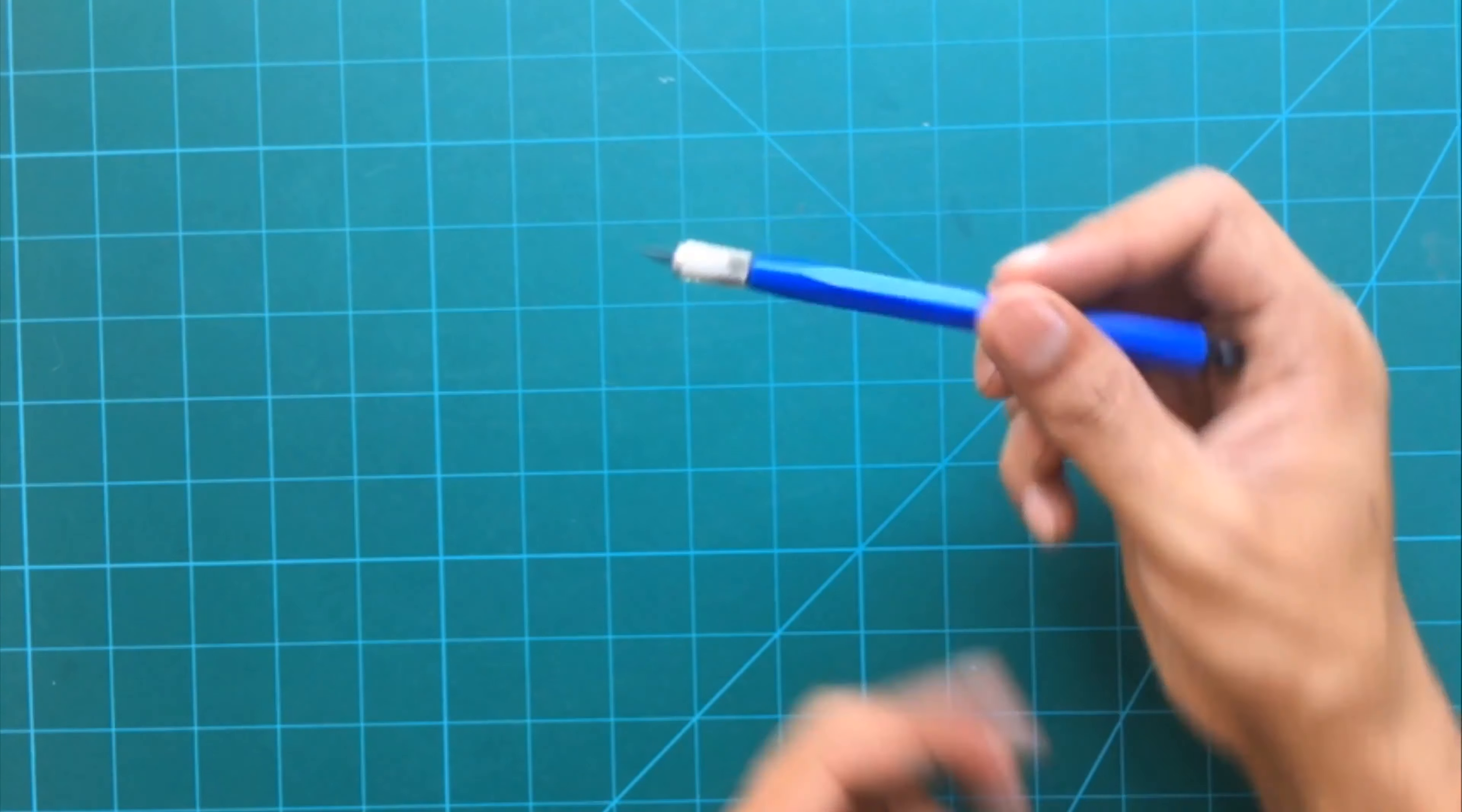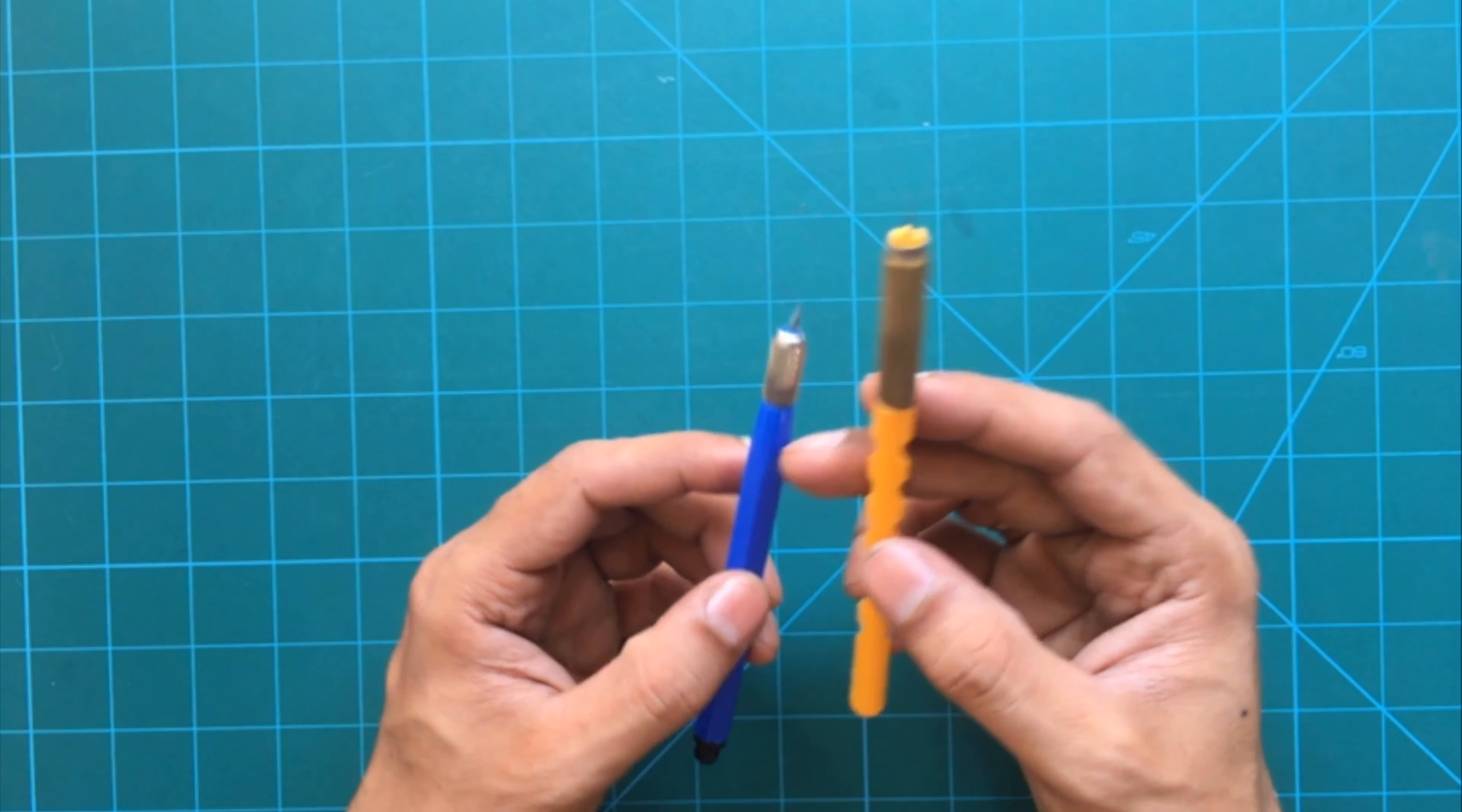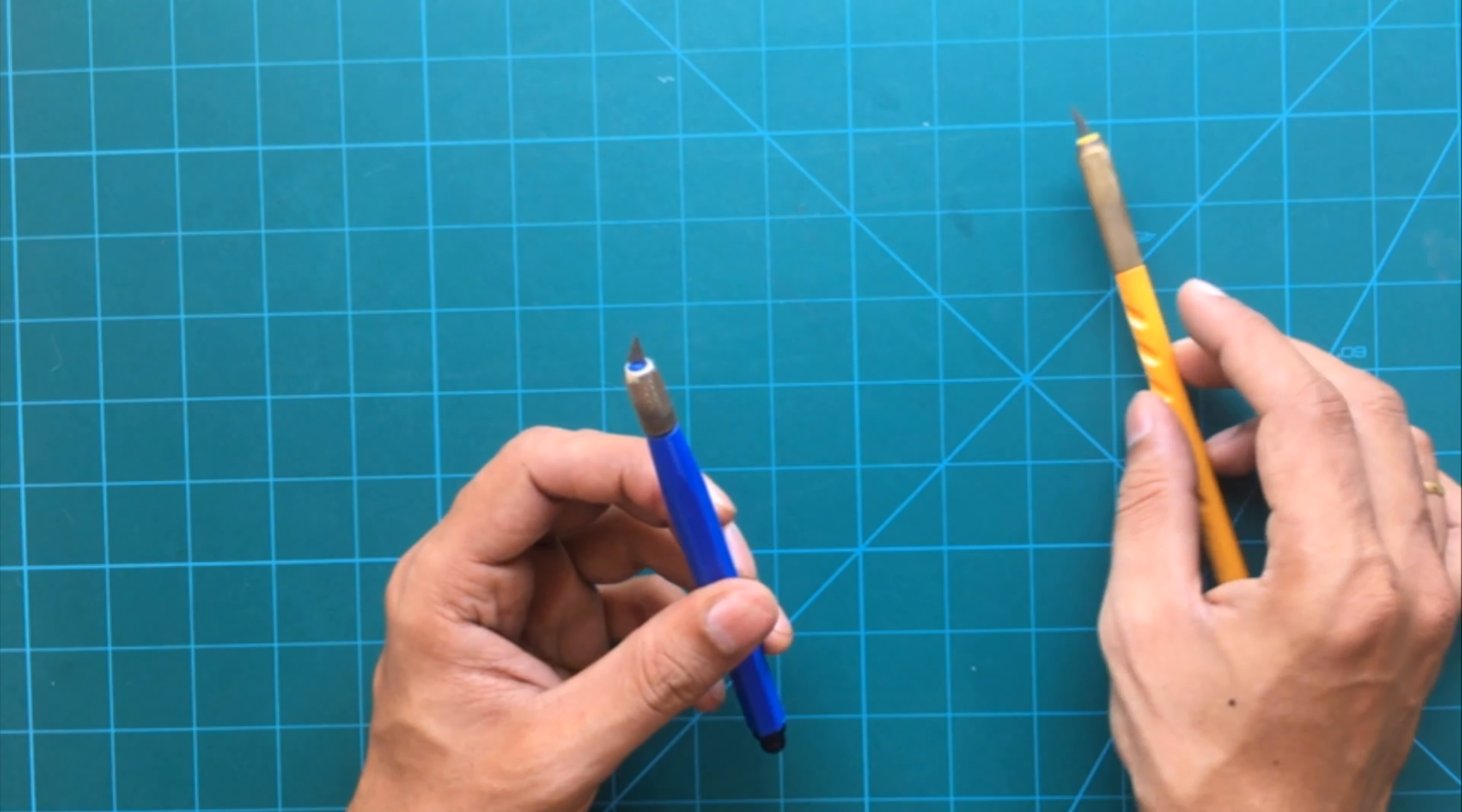The next knife I have is this blue knife which is similar to the yellow knife I have shown earlier. In terms of the differences between the two knife, you can see that the grip of the blue knife is smaller than the grip of the yellow knife. Also, the yellow knife is much more steadier than the blue knife.